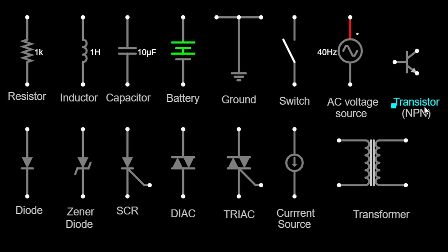A transistor is a semiconductor device that amplifies or switches electronic signals. The NPN (negative-positive-negative) transistor symbol consists of two outward-pointing arrows, representing the flow of current.